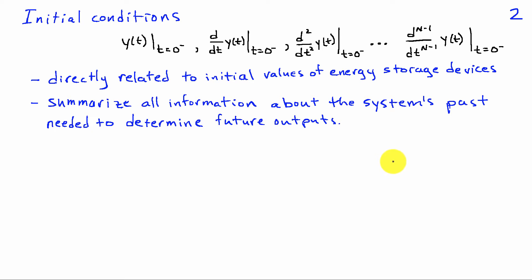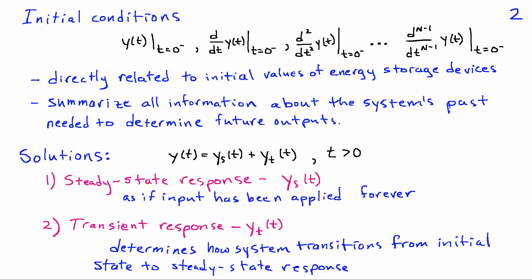This is what is unique about differential equation descriptions. For example, with the impulse response description for a linear time-invariant system, we simply must know the input for all time. We're going to look at how we solve such a differential equation using an approach that gives us lots of insight about the behavior of such systems. We write the output y(t) as a combination of two terms: y_s(t), the steady-state response showing how the system behaves if the input had been applied forever, and y_t, the transient response, which tells us how the system transitions from its initial state to the steady-state response. This form applies for times t greater than 0.